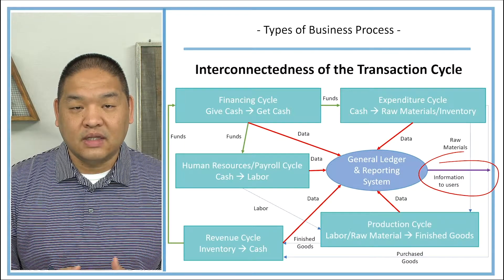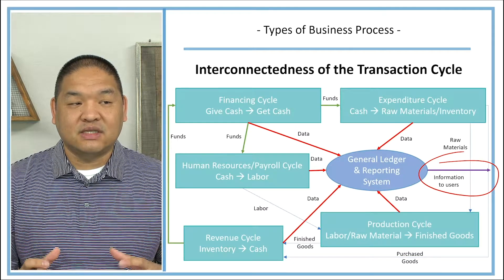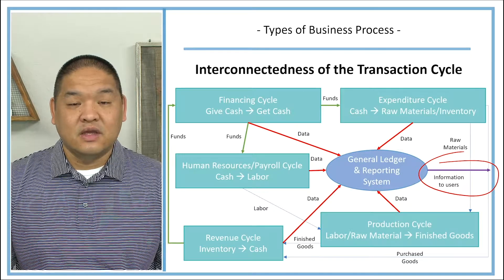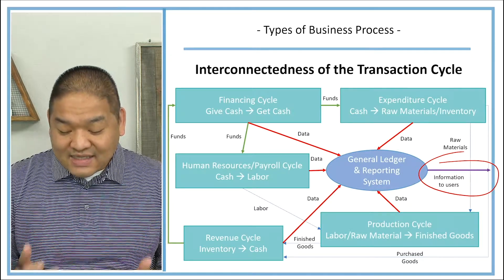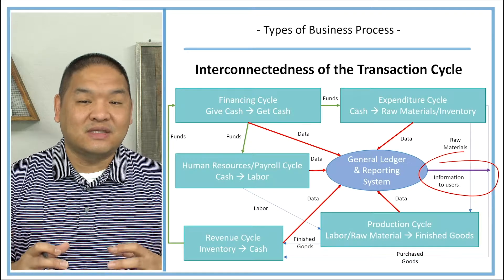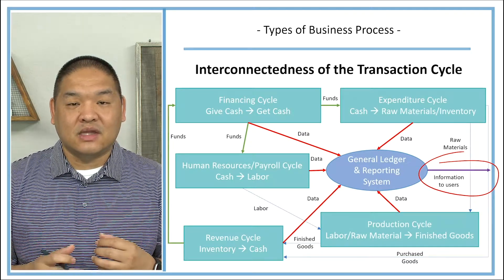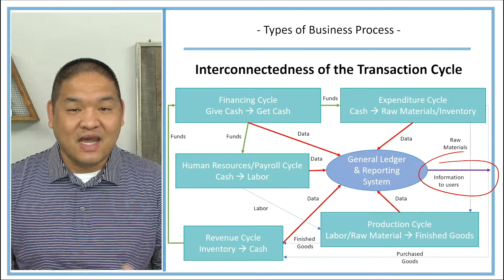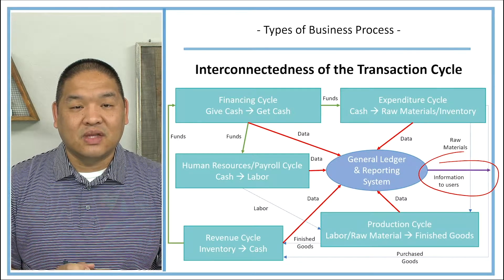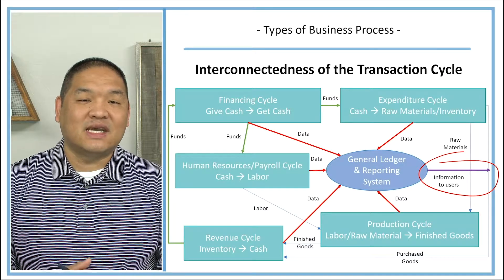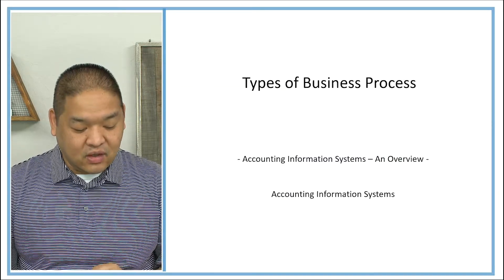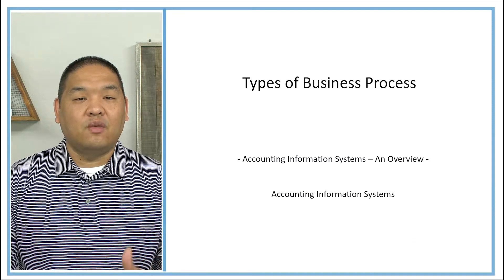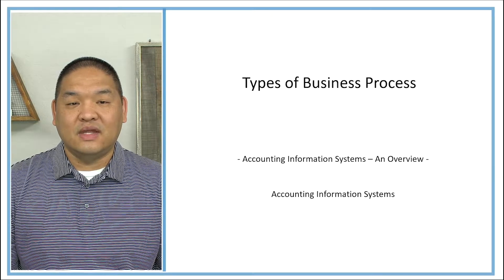Transaction cycles are very important in how we look at accounting information systems because the tasks unique to each cycle are very different from one another. They must also be interconnected so they work together to achieve the goals of the organization. All that data is ultimately summarized into the general ledger system and sent out to the decision makers of the organization. That is a look at the different types of business processes.